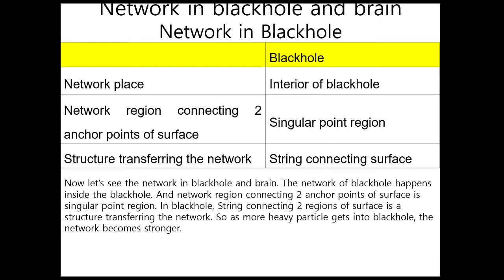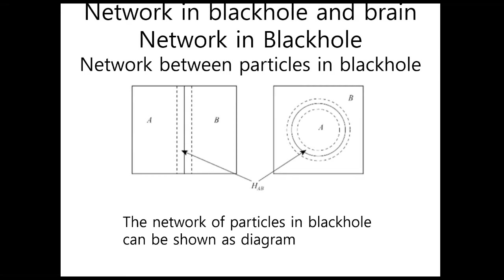Now let's see the network in the black hole and brain. The network of the black hole happens inside the black hole. The network region connecting two anchor points of the surface is a similar point region. In a black hole, strings connecting two regions of the surface are the structure transferring the network. So as more heavy particles get into the black hole, the network becomes stronger. The network of particles in a black hole can be shown as 5M, and as the particles get further, the network should be strong and close to similarity.